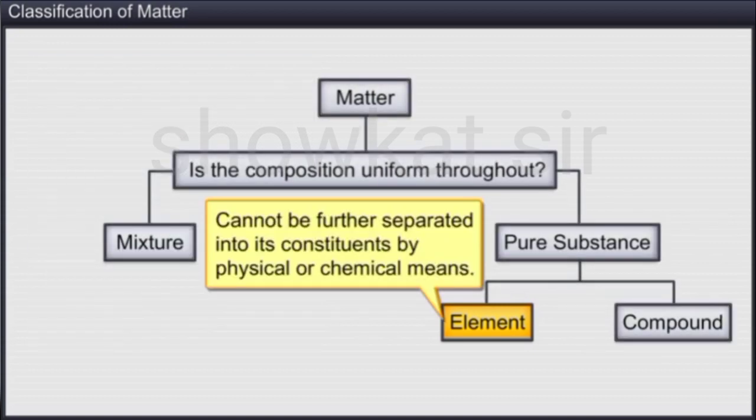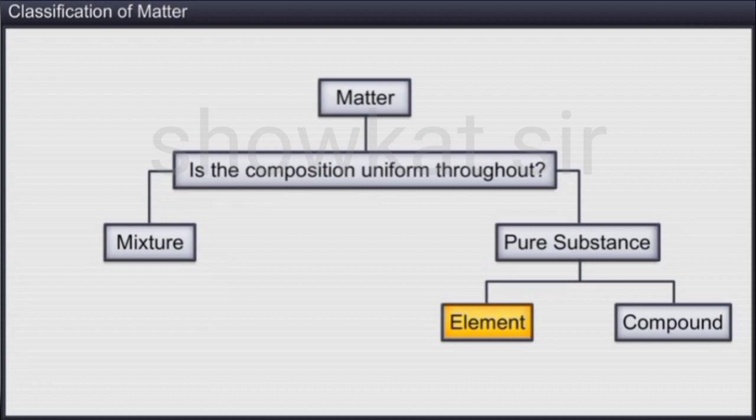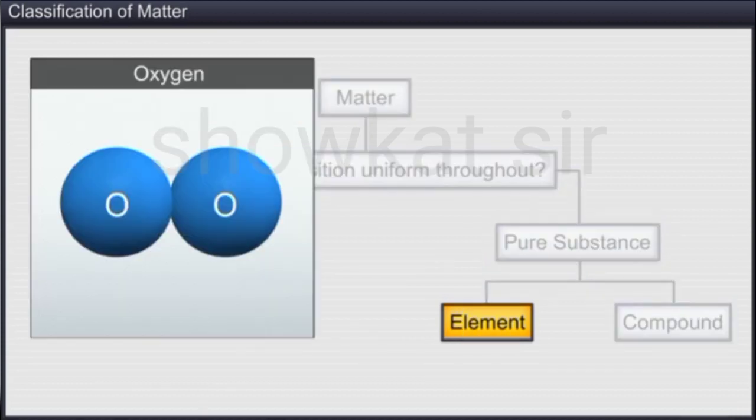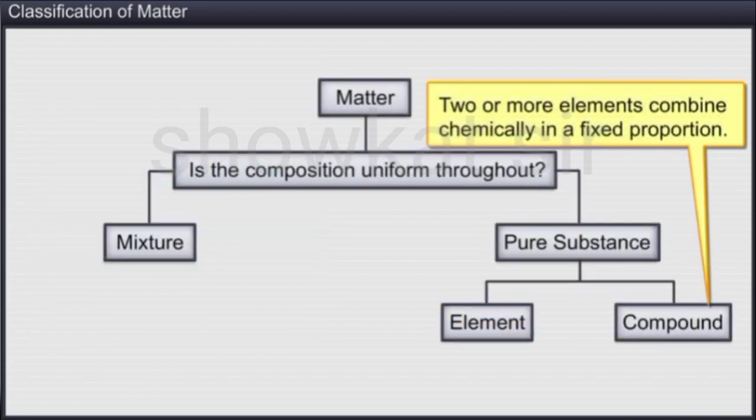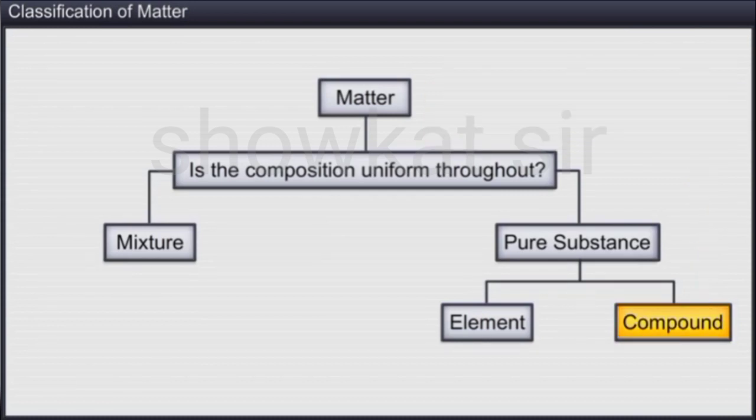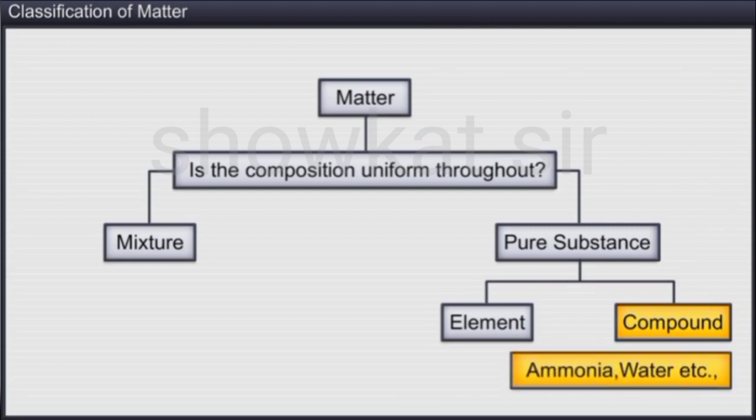An element cannot be further separated into its constituents by physical or chemical means. For example, oxygen as an element cannot be separated into oxygen atoms. In compounds, two or more elements combine chemically in a fixed proportion or fixed ratio by mass. Ammonia, water, and glucose are examples of compounds.